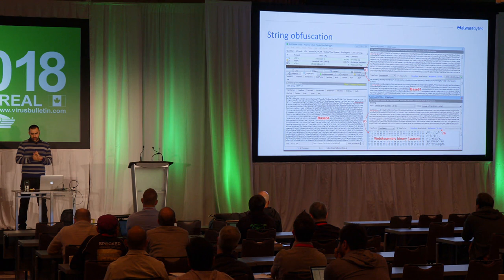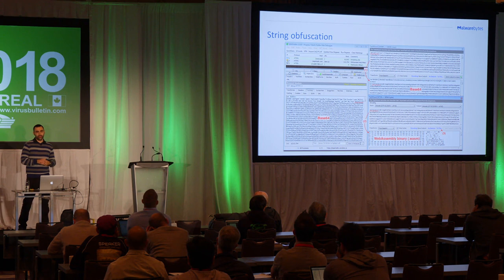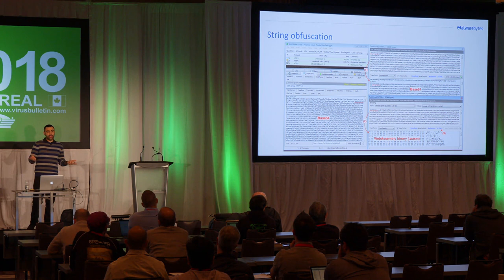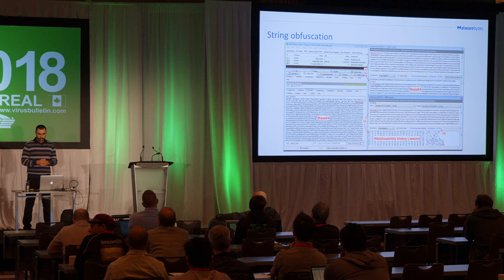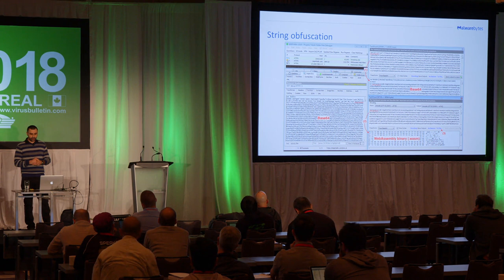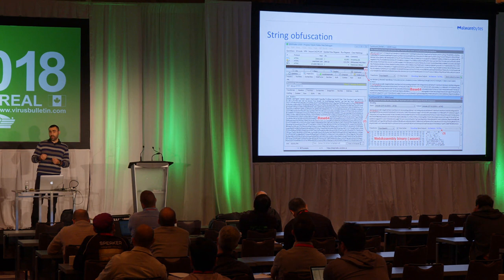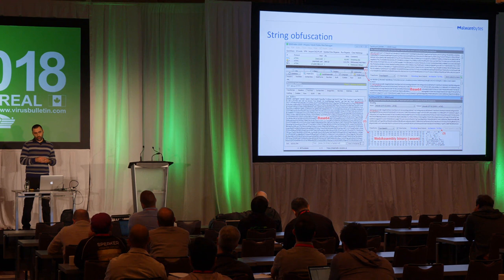Another interesting technique is string obfuscation. I study a lot of web threats and I see that a lot. In the beginning, everything was in clear text — the coinhive.com URL was right there in the DOM. But that's easy to detect. What we're seeing now is pretty much everything is obfuscated, with double obfuscation. The WebAssembly module is also inline but obfuscated. If you're trying to target particular strings within the source code, you're not going to see anything.